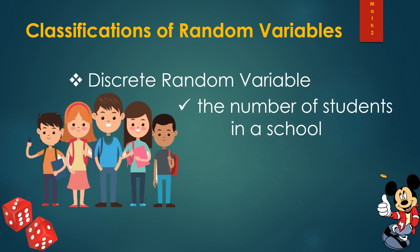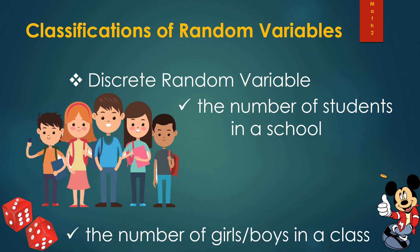More examples of discrete random variables include the number of students in a class — we count them and the value varies per school — and the number of boys or girls in a class, which also varies per class and is obtained through counting.